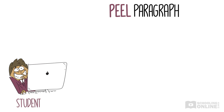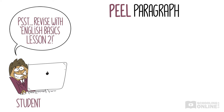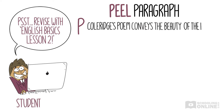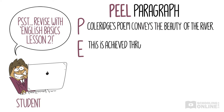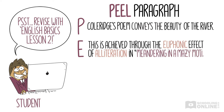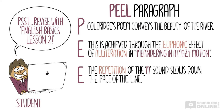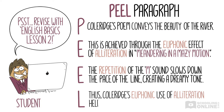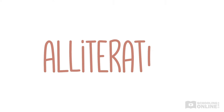Let's explain this properly in a PEEL paragraph. To find out more about how to construct a PEEL paragraph, check out English Basics Lesson 2 or revisit Perfecting Poetry Lesson 1. Our main point is that Coleridge's poem conveys the beauty of the river. As evidence, we would say this is achieved through the euphonic effect of alliteration. Then we'd offer our explanation: the repetition of the M sound slows down the pace of the line, creating a dreamy tone. Finally, we would link back to the main point: thus, Coleridge's euphonic use of alliteration helps capture the attractiveness of the river.